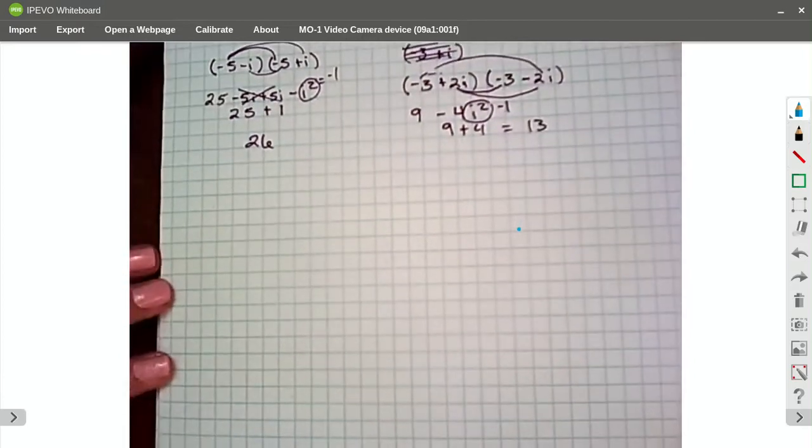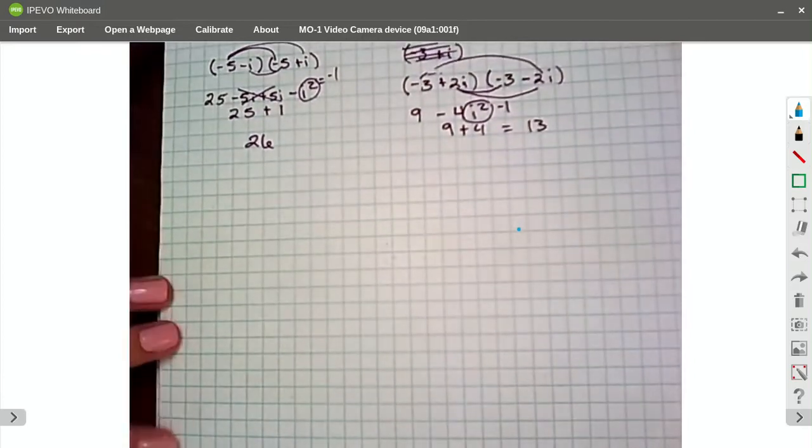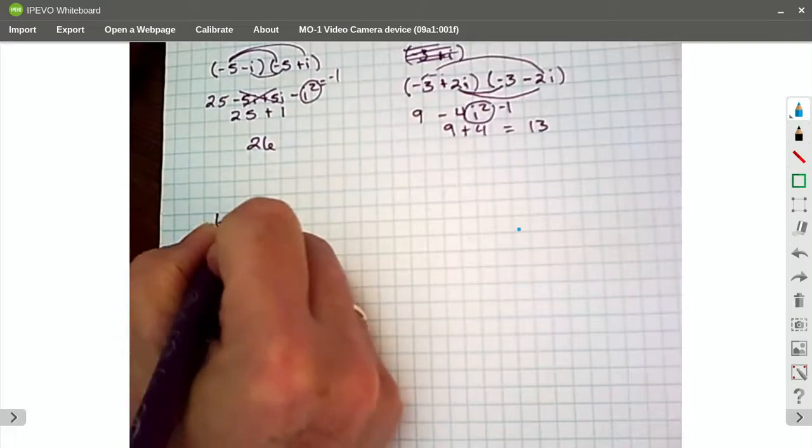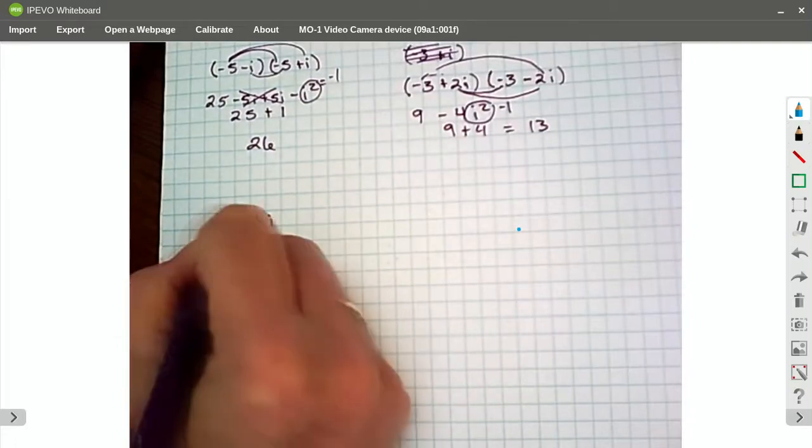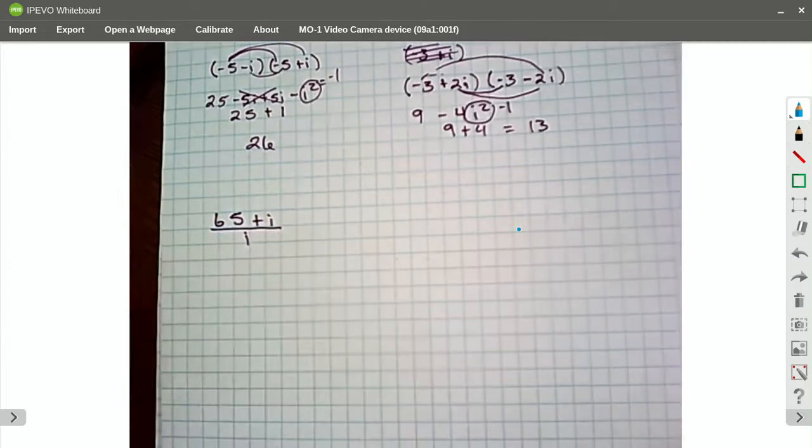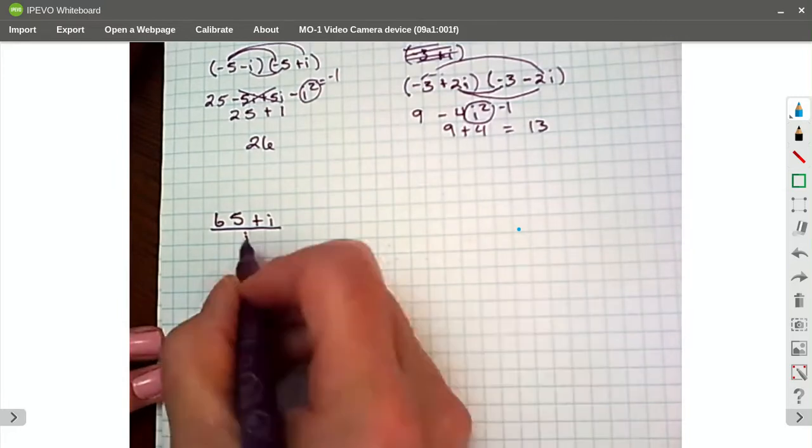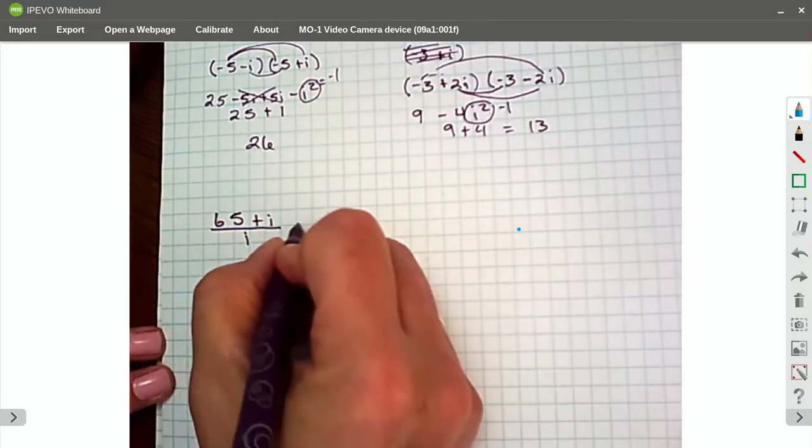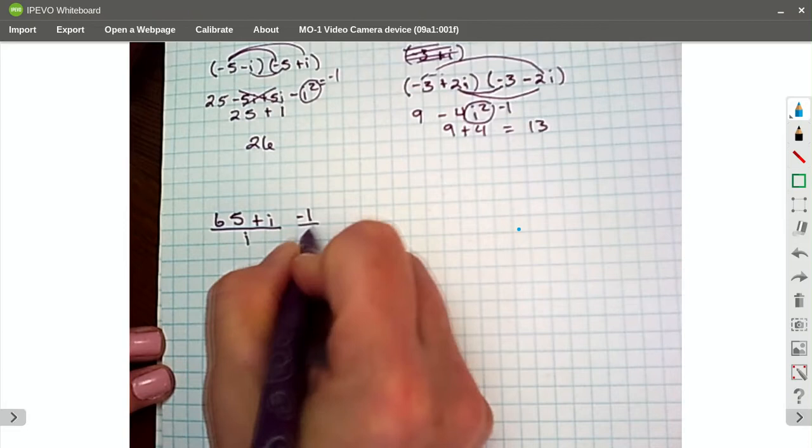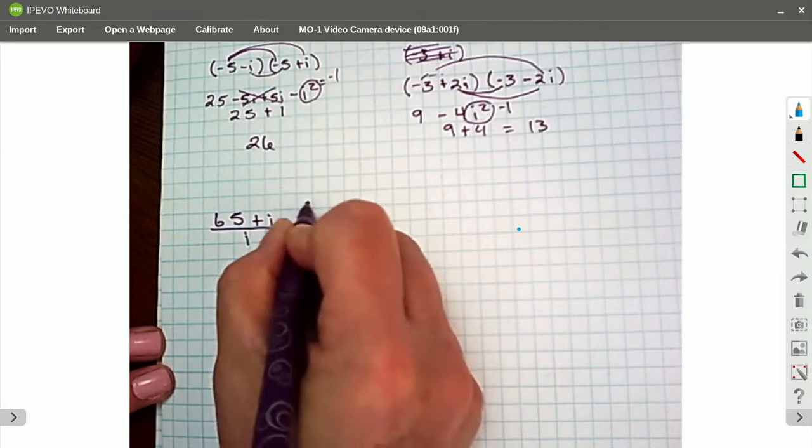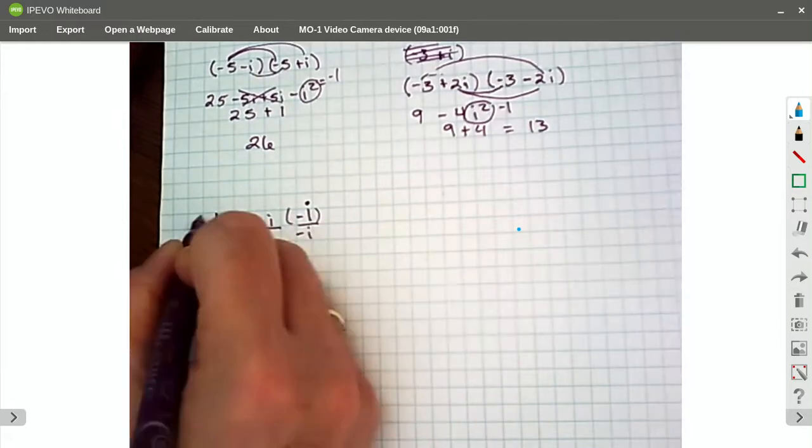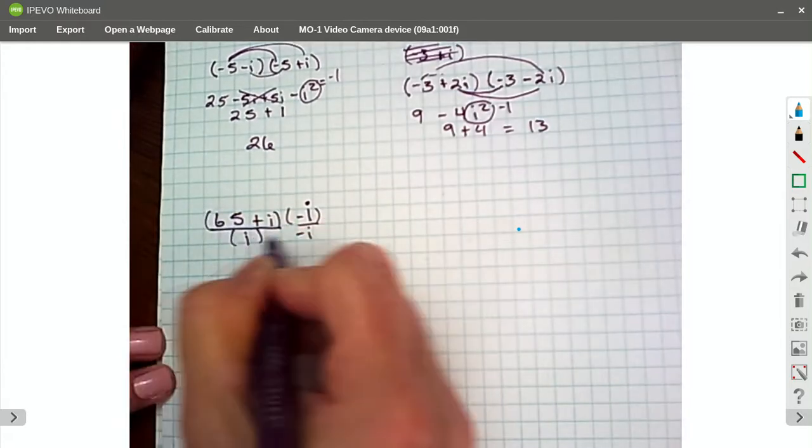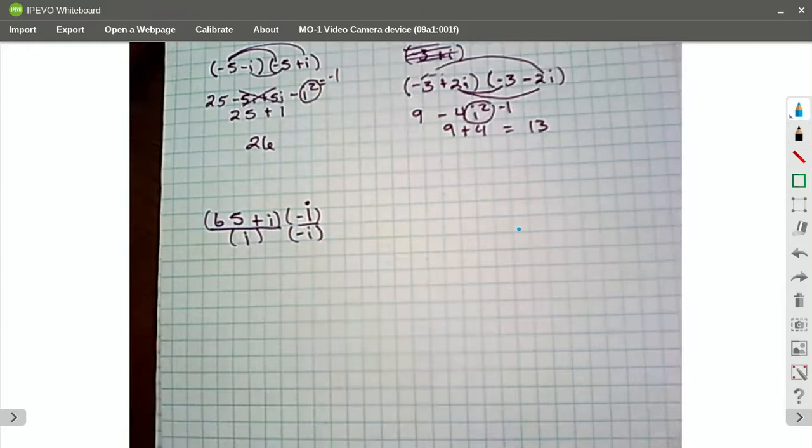So when do we use this? If you have a rational expression, let's say we have 65 plus i over i. Well, what's going to be the conjugate of that? Negative i. So all I'm going to do is I'm going to make a 1 out of that conjugate. Negative i. Negative i.